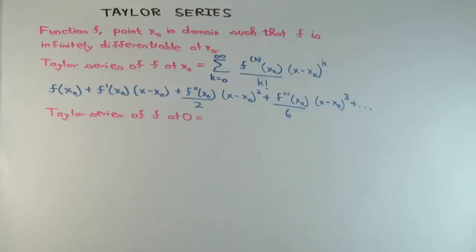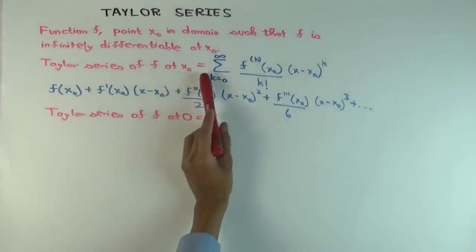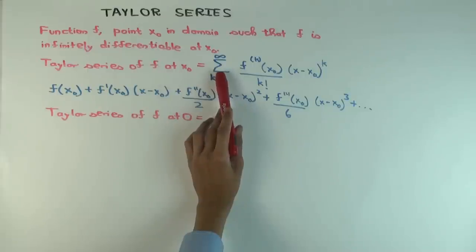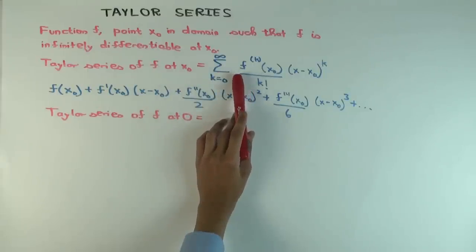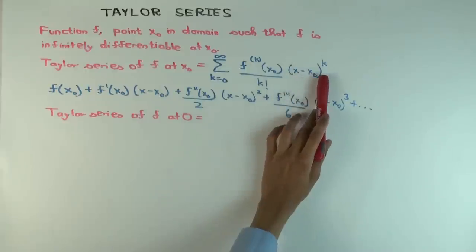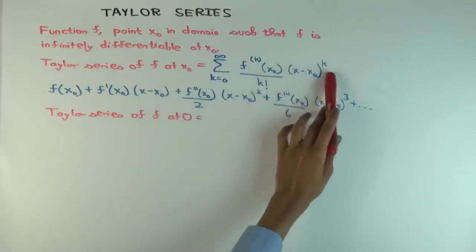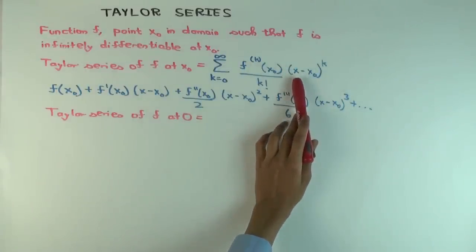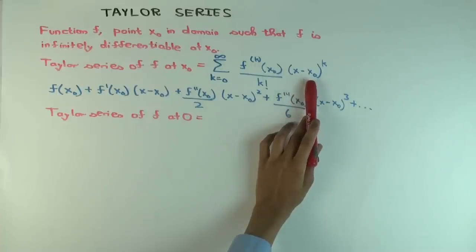Okay, so the Taylor series of f at x0 is defined as an infinite sum. So it's defined as what's called a power series. And the way the sum goes like this: x minus x0 to the k. So x is a variable here, x is an unknown, x0 is known.